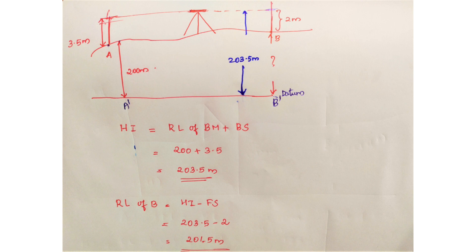The height of instrument is set at a distance. In the telescope center, I set the height of the line. If A is the benchmark at 200 meters and the backside reading is 3.5 meters, then 200 plus 3.5 meters is the height of the instrument. You add the two data points to get the instrument center height.